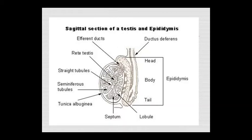The structures visible include the efferent ducts, rete testis, straight tubules, and seminiferous tubules. The tunica albuginea, septum, and lobules are also shown. The epididymis is divided into head, body, and tail.